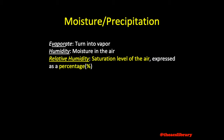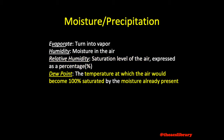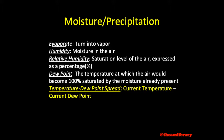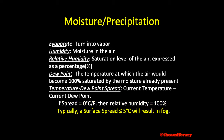As air cools it can hold less and less water. Eventually the air may become so cool that it reaches 100% relative humidity. The temperature at which this occurs is known as the dew point, defined as the temperature at which the air becomes 100% saturated by the water vapor already present in the air. The term temperature dew point spread refers to the difference between the current temperature and dew point. As the spread between temperature and dew point lessens, the relative humidity increases. When the spread reaches zero the relative humidity will be 100%. Typically a temperature dew point spread of 5 degrees Celsius or less will result in fog, and while the surface spread may be used to anticipate fog, it has little effect on precipitation.